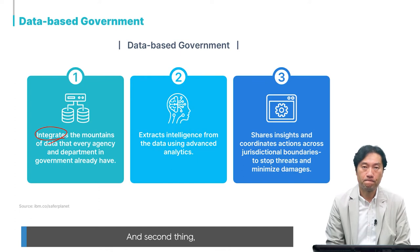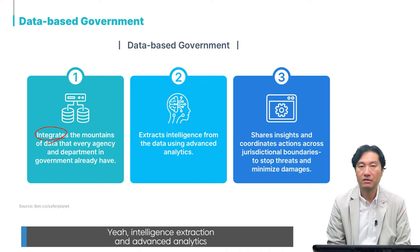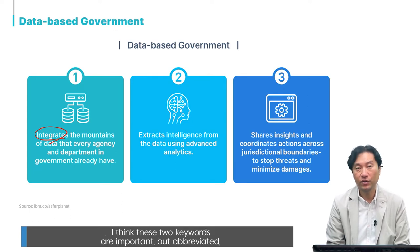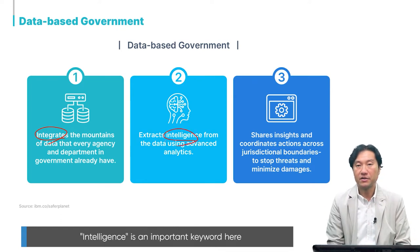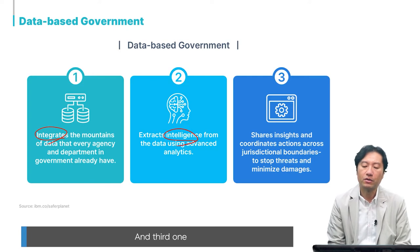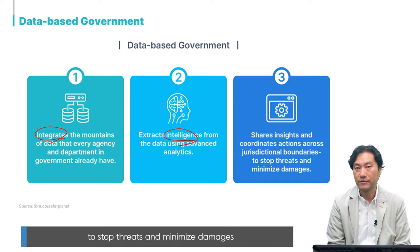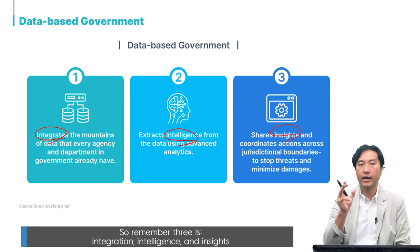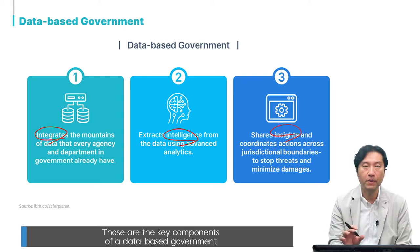Second, it extracts intelligence from the data using advanced analytics. Intelligence and advanced analytics are two important keywords here. Third, it shares insights and coordinates actions across jurisdictional boundaries to stop threats and minimize damages. So remember the three I's: integration, intelligence, and insights — those are the key components of a data-based government.